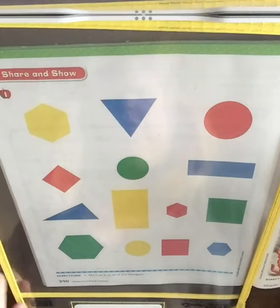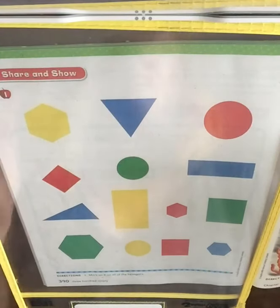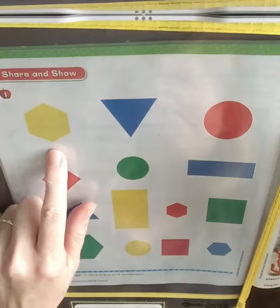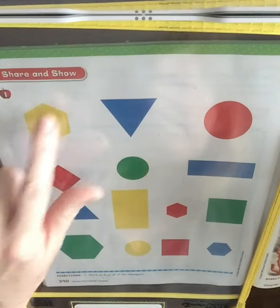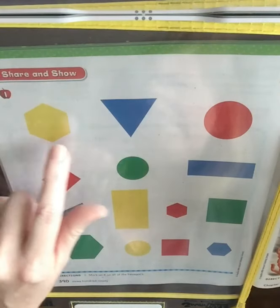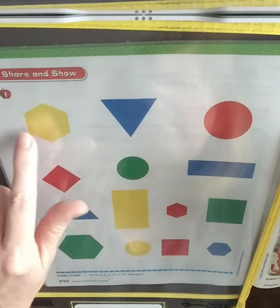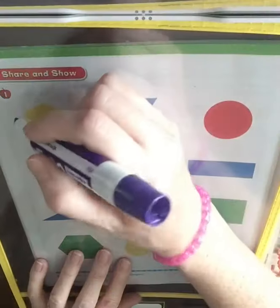Here we are. We're going to mark an X on all of the hexagons. Remember, they have six sides and six vertices. So here we have one, two, three, four, five, six sides, and one, two, three, four, five, six vertices.